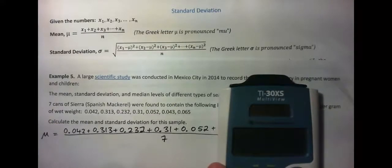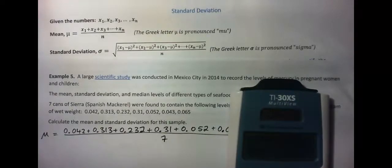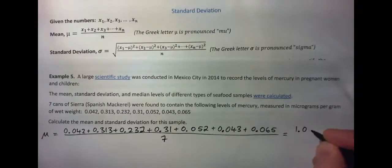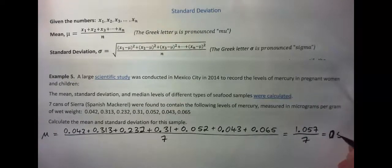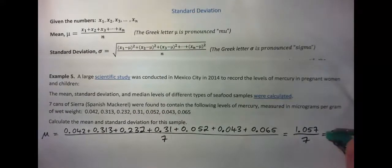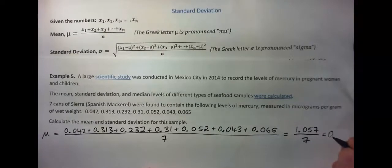So, in the calculator, 0.042 plus 0.313 plus 0.232 plus 0.31 plus 0.352 plus 0.343 plus 0.065. Press Enter. You should get that and divide it by seven. So you should get 1.057 divided by 7, which gives you 0.151, which is the same thing that they have in the study, as you can see from the website.